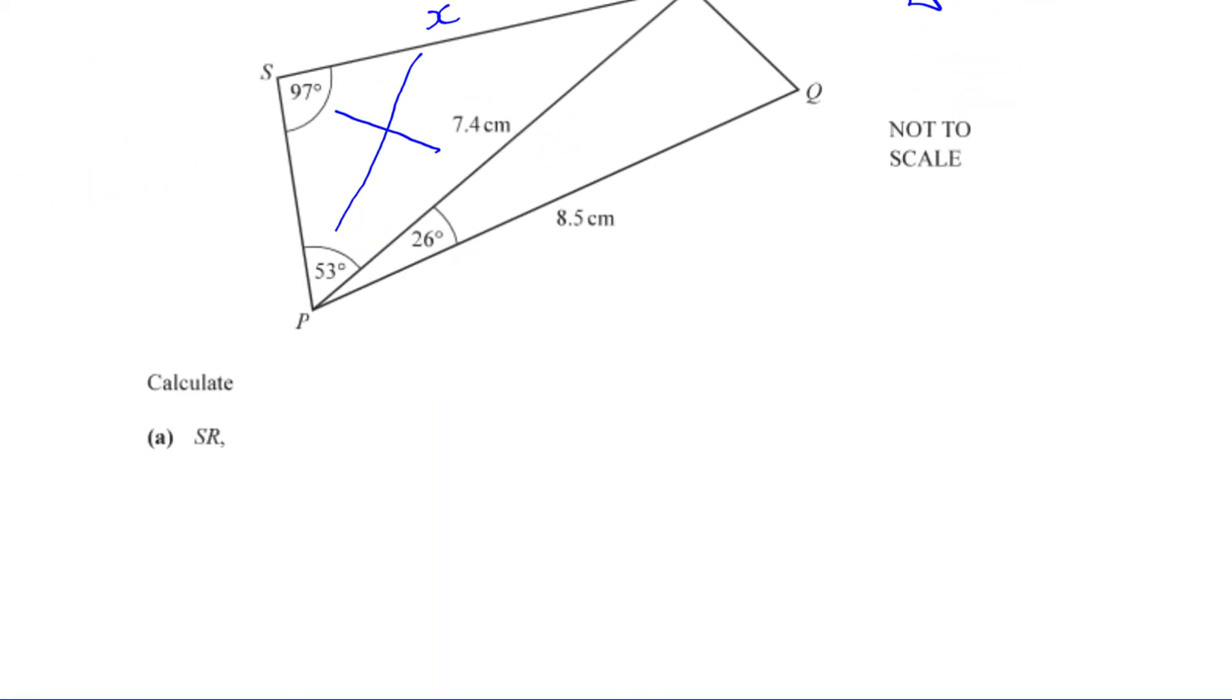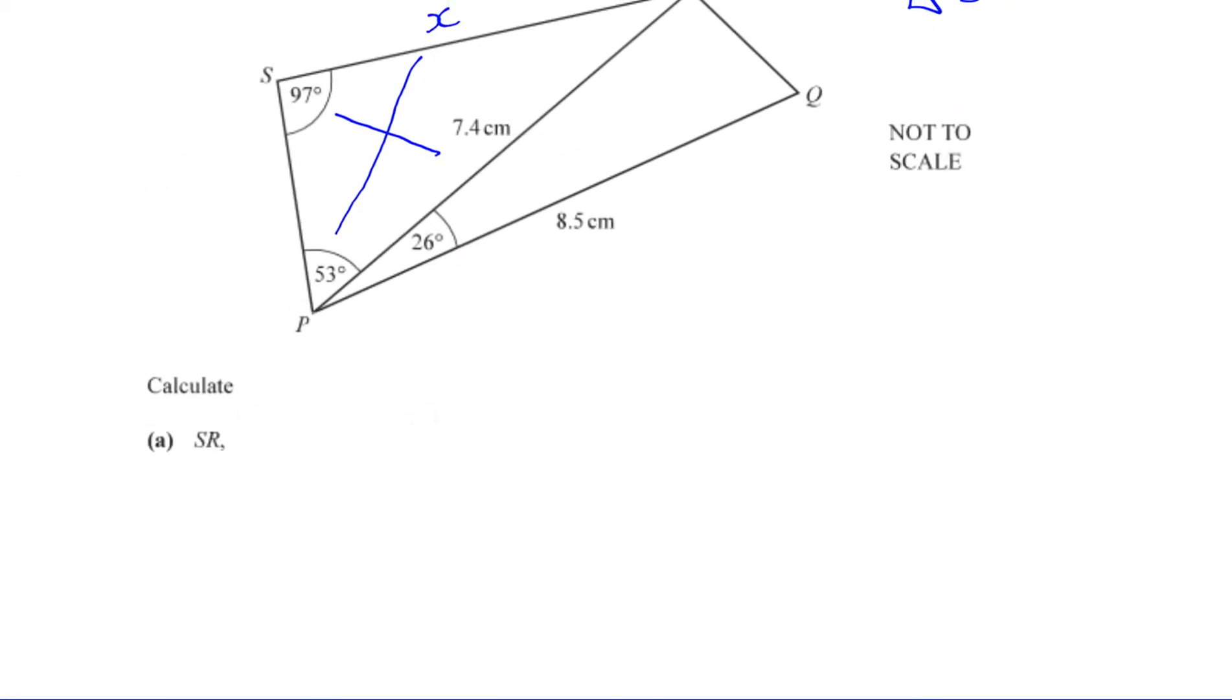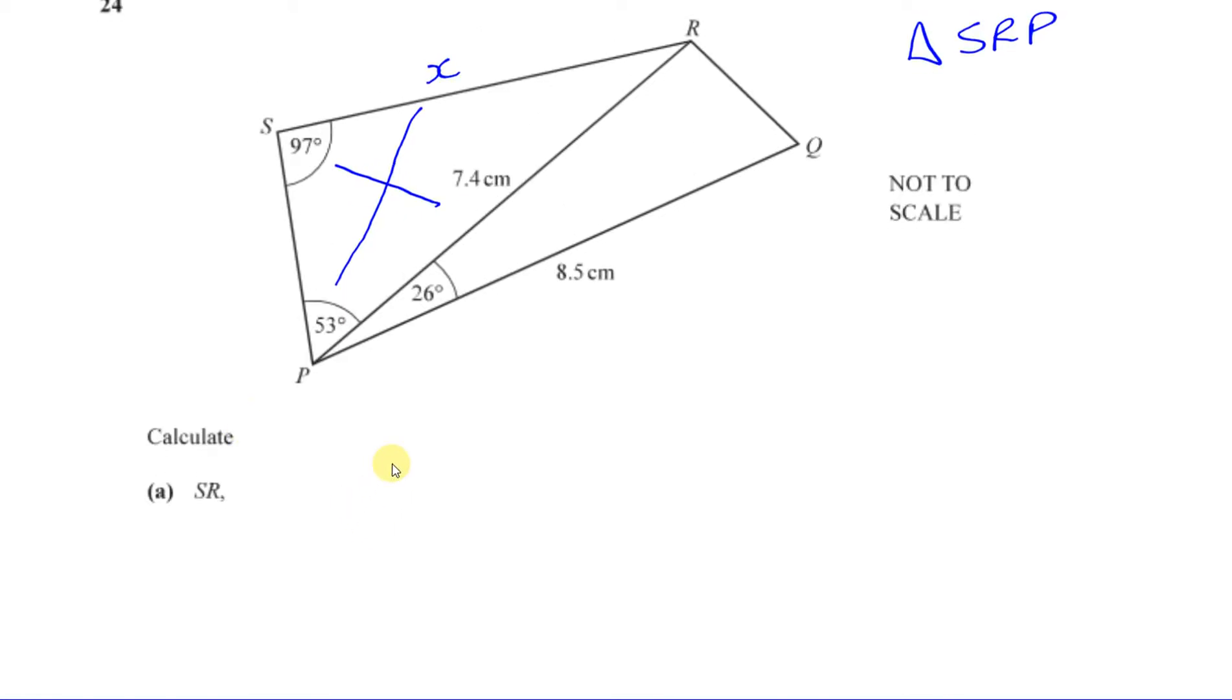So let's go ahead and do that. We know that X over the sine of the angle opposite is equal to 7.4 over the sine of the angle opposite. I like to use the sine rule: if I'm finding a length, I'll put the lengths on top. If I'm finding an angle, I'll put the angles on top. In this case, I'm going to put the lengths on top because we're finding a length.